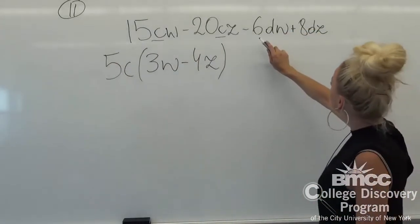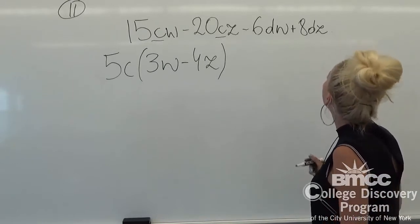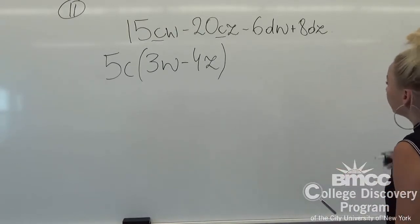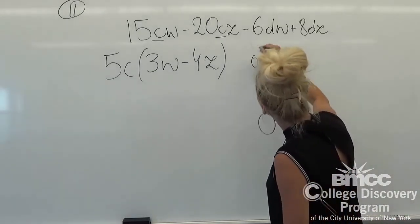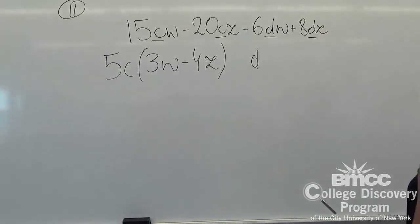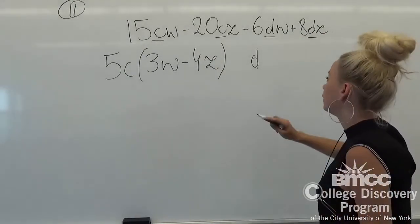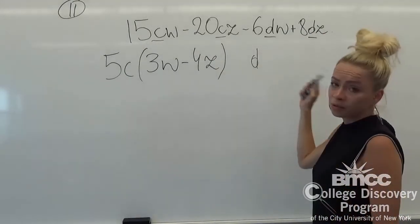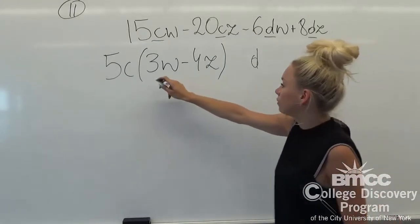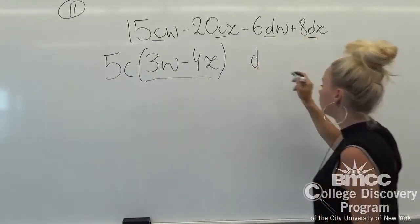We have negative 6dw and plus 8dz. From both of them we can factor out d, which is common. Right now we know that in order for us to combine and use our method, we have to have matching parentheses.